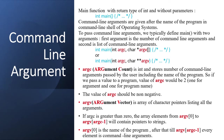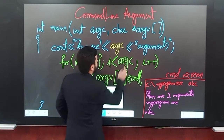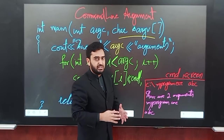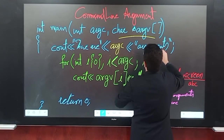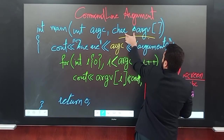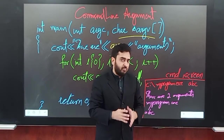We can also declare the header of the main function as: integer main with integer argc comma char double pointer argv. This is very similar to the first kind of declaration. In some books or literature you will see another form of this declaration using an array. Here we declare a pointer to an array, and since an array is also like a pointer, this means we are declaring a double pointer.